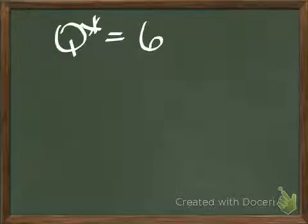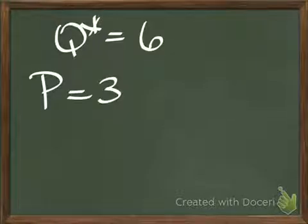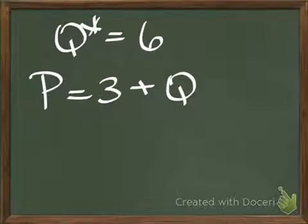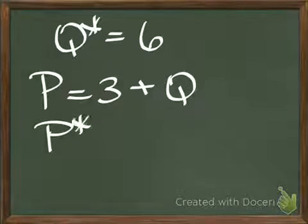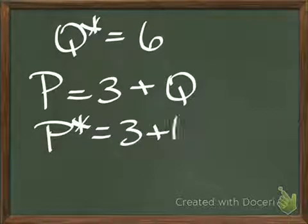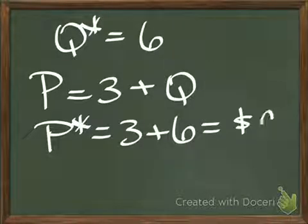To solve for price, pick either equation. I'll just use supply here, P equals 3 plus Q. I plug in my Q. I find that my equilibrium price is 3 plus 6, or $9.